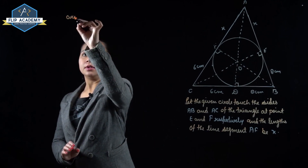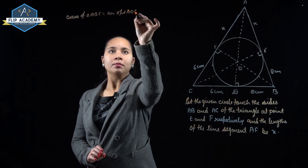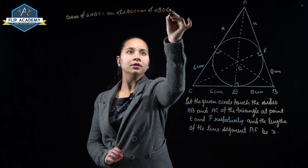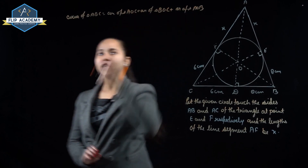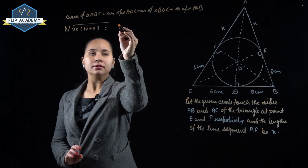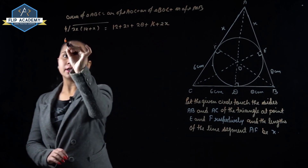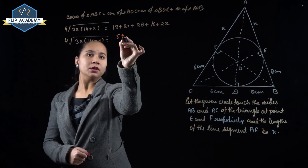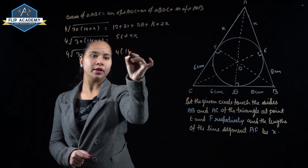The area of triangle ABC equals area of AOC plus area of BOC plus area of AOB. So 4√(3X(X+14)) equals (2X+12) + 28 + (2X+16) = 56 + 4X. This gives 4√(3X(X+14)) equals 4(14+X), so √(3X(X+14)) equals X+14.